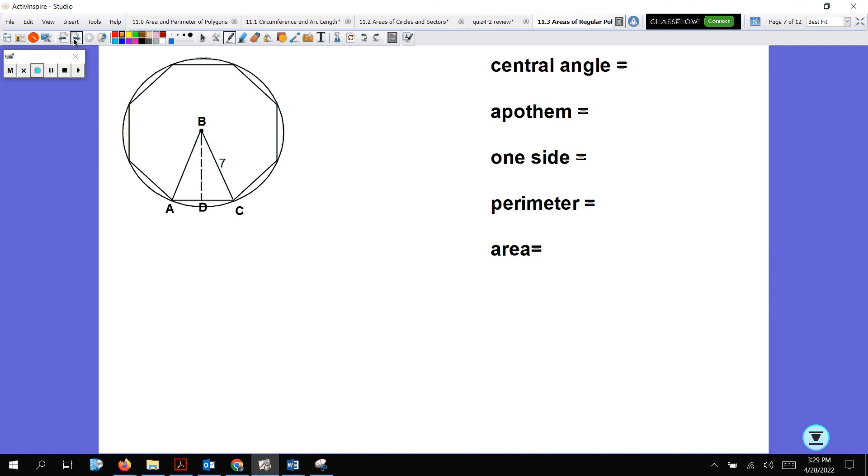Here we go. Central angle. How many sides do I have? 1, 2, 3, 4, 5, 6, 7, 8. It's an octagon. So central angle is 360 divided by 8, that gives us 45. Remember, that's the whole angle here. I only want half of the central angle. So half of 45 is 22.5 degrees. They gave us the hypotenuse. That is not the apothem. I need this line. I need that. That is the apothem.